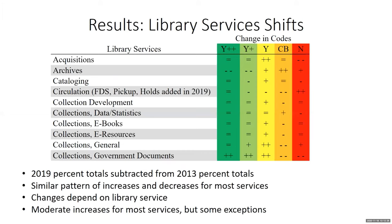The next analysis examined each library service and the changes in each code. The percent change was determined by calculating what percent of university areas of focus for each library service belonged in each code, then subtracting 2019 percent totals from 2013 totals. In the table, an equal sign means no change; a single plus sign indicates a positive change of 0–10%; a double plus sign indicates over 10%; a single negative sign indicates a decrease of 0–10%; and a double negative sign indicates a decrease of greater than 10%.